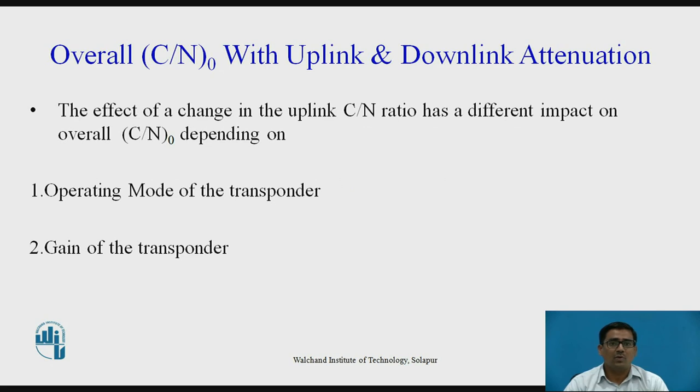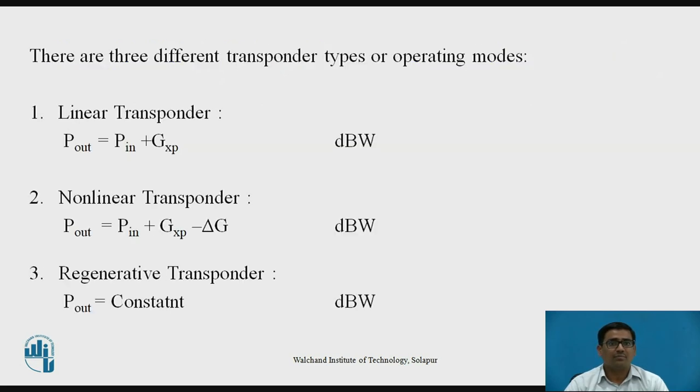Overall C/N_0 with uplink and downlink attenuation. The effect of a change in uplink C/N ratio has different impact on overall C/N_0 depending on: first, operating mode of the transponder, and second, gain of the transponder. There are three different transponder types or operating modes. The first is linear transponder, second is nonlinear transponder, and third is regenerative transponder.